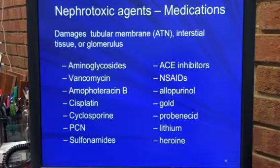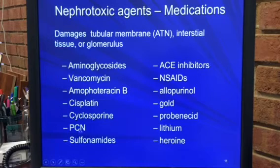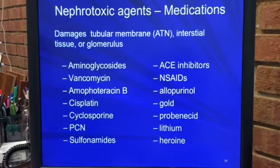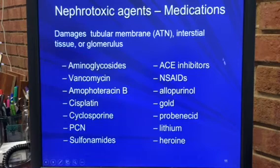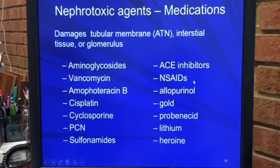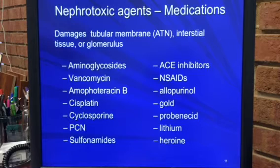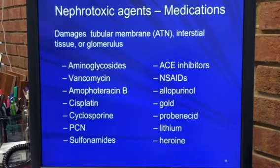Cyclosporin is an immune-suppressing drug. Penicillin can cause nephrotoxicity in some patients, though it doesn't happen often. The same is true for sulfonamides. ACE inhibitors and NSAIDs are also on this list. NSAIDs are pretty well understood to have the potential for renal failure, especially if the patient already has compromised kidney function.